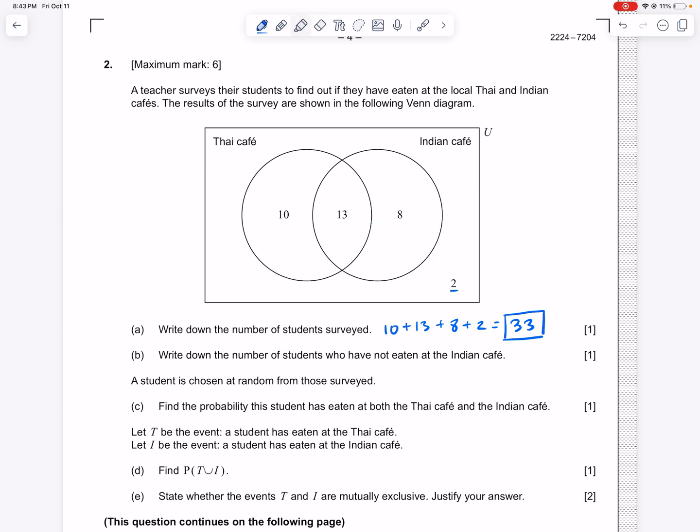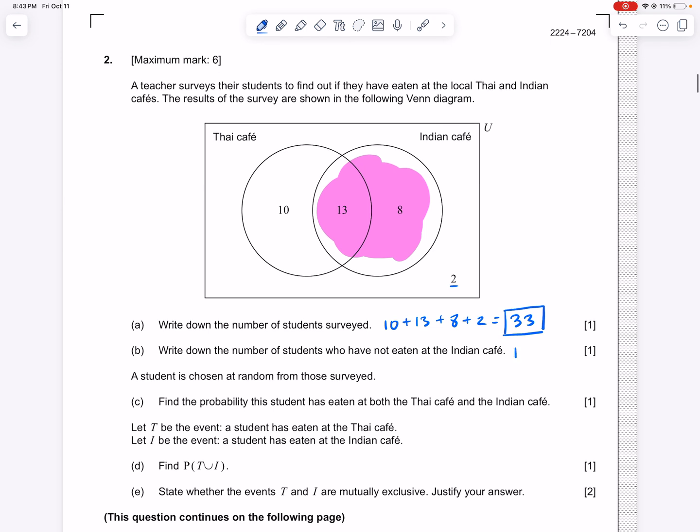I'm going to shade the people who have eaten at the Indian Café. So that whole circle are the people who have eaten at that café. Everyone else outside of that pink, outside of that circle, are the people who have not eaten at the Indian Café. So that's that 10 plus 2, and that gives us 12.